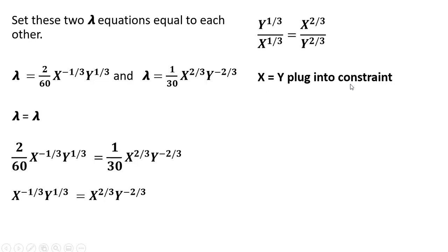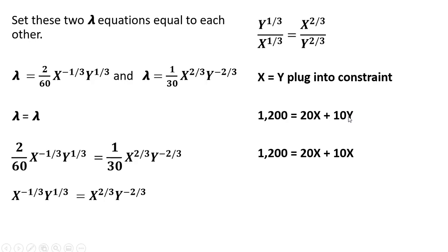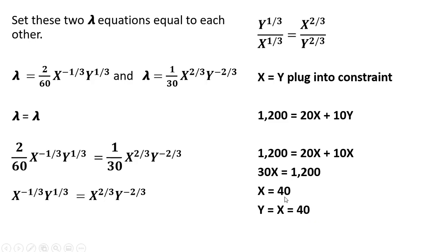We're going to plug this into our constraint. Here's our budget constraint, so we're going to substitute in. Where we have y, we'll replace that with x. Solving for x, x equals 40. And solving for y — since y equals x — y will also equal 40. So this is the utility-maximizing consumption bundle for this consumer.